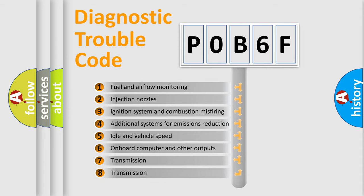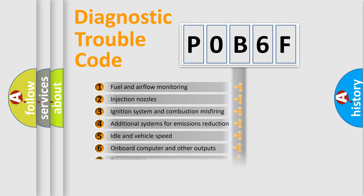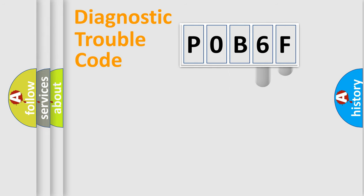The third character specifies a subset of errors. The distribution shown is valid only for the standardized DTC code.